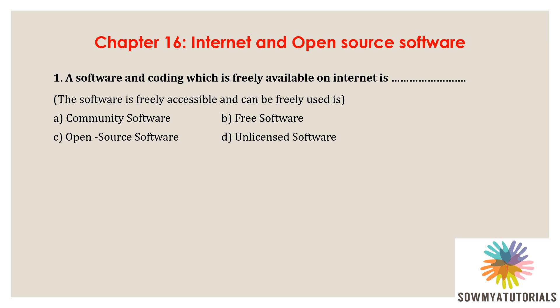Community Software is a platform which allows people to create, interact, and share information online. Free Software means the software is freely accessible and can be freely used, changed, improved, copied, and distributed by all who wish to do so. No payments are required for free software.